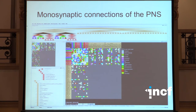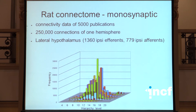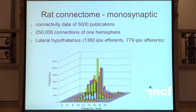The density of connections are described in the tract tracing literature, in most cases by semi-quantitative values, which are color-coded here. We have collated data from over 5,000 tract tracing publications of the rat, which were applied to the WHO rat organism, and 250,000 connections per hemisphere are included in the rat connectome. The region which has the most outputs and inputs is the lateral hypothalamus.